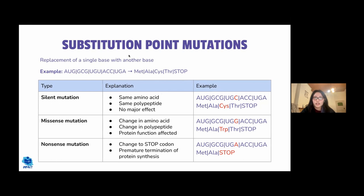For example, in the codon UGU, if the last base is mutated from U to C, both UGU and UGC encode for cysteine, so the polypeptide sequence doesn't change. The protein produced is the same, and the mutation has a neutral effect. In missense mutations, the mutation results in a codon that encodes for a different amino acid, changing the polypeptide sequence. Protein function is affected, and this can be beneficial or harmful.